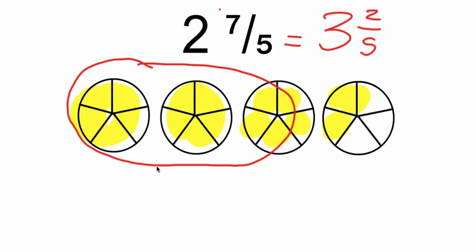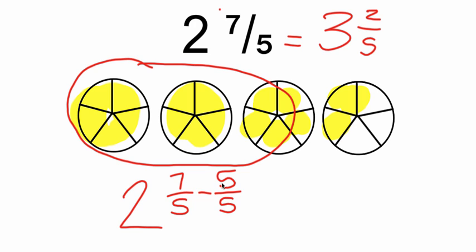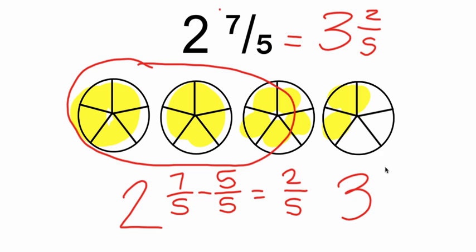All we've done is look at that improper fraction — seven-fifths — and basically take a whole out of it. We're taking five-fifths out, so we get two-fifths left. When we take it out, we have to add it back to the whole number. That's how we get five-fifths plus two is three and two-fifths.